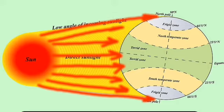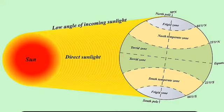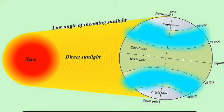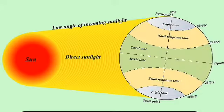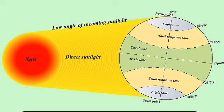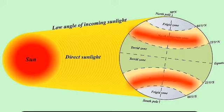When sun rays fall perpendicular on the tropical region, those places absorb the maximum amount of heat. The part above the Tropic of Cancer up to the Arctic Circle, and the part below the Tropic of Capricorn down to the Antarctic Circle, get a little less heat compared to the equatorial/tropical region. This is why the entire area between the Tropic of Cancer and the Arctic Circle, and the Tropic of Capricorn and the Antarctic Circle, has medium-range temperature.